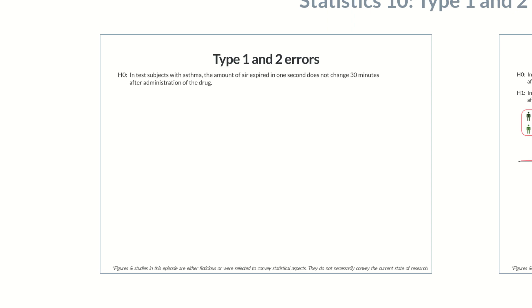The alternative hypothesis H1, which is mutually exclusive to the null hypothesis, was: in test subjects with asthma, the amount of air expired in one second changes 30 minutes after administration of the drug.